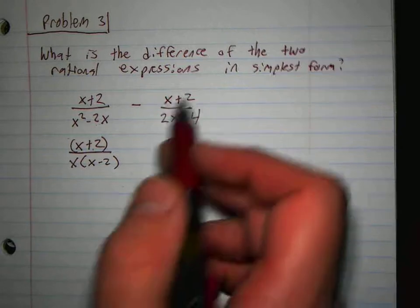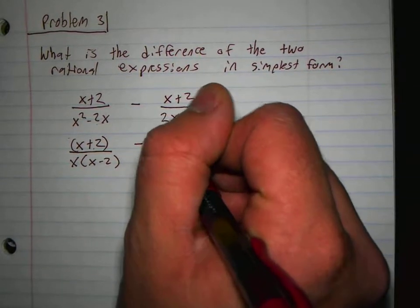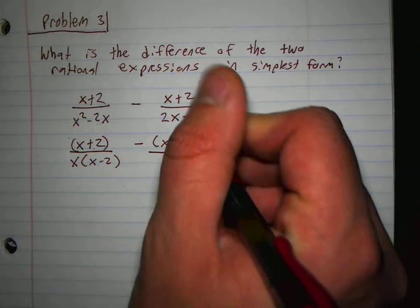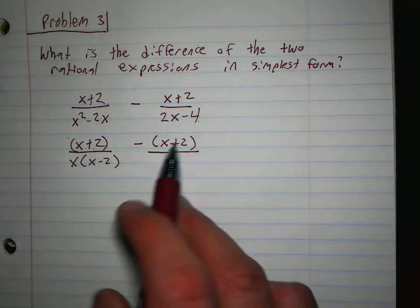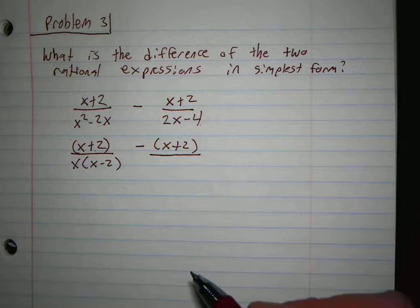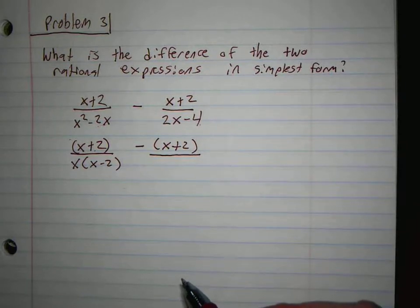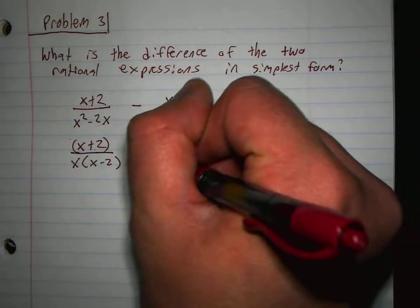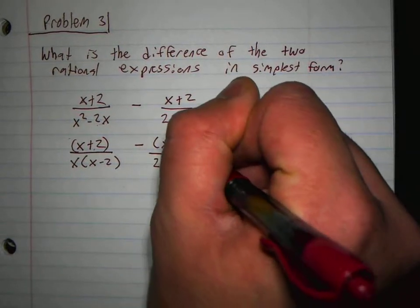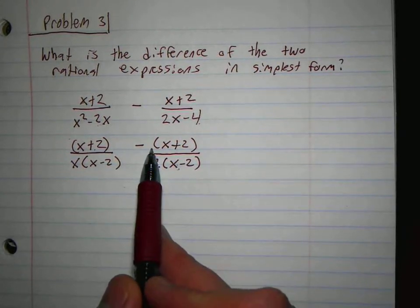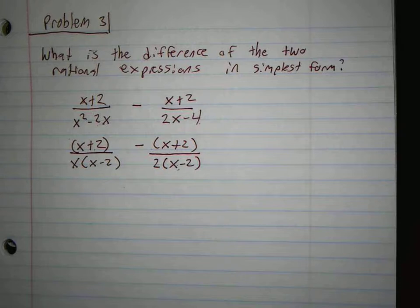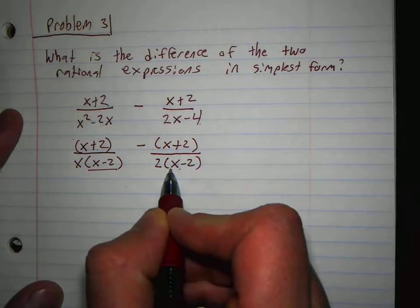Now the next one, x plus 2, 2x minus 4. Is there anything to come out of that? 1, 2, and again, I would look and see, do I have an x minus 2 here and here? Because if I did, I would just cross them out. If I had a 2 up there by itself, I would cross those out. Man, so they're almost the same. They both have an x minus 2. That's good.